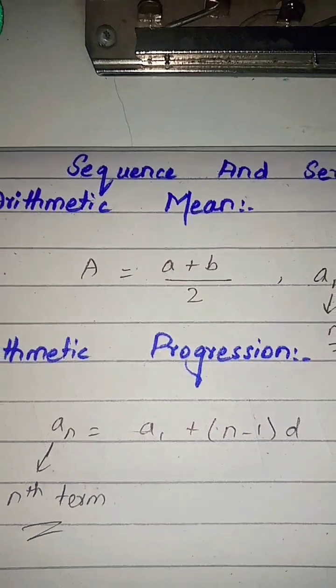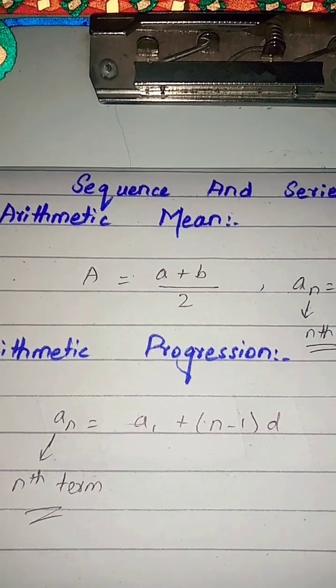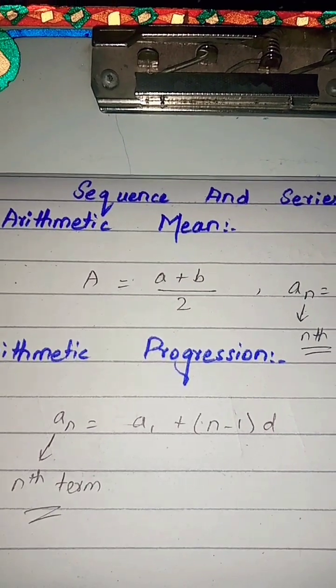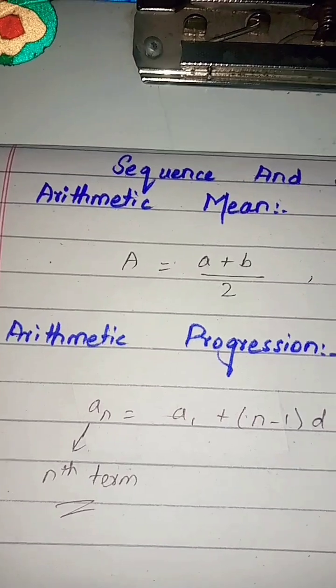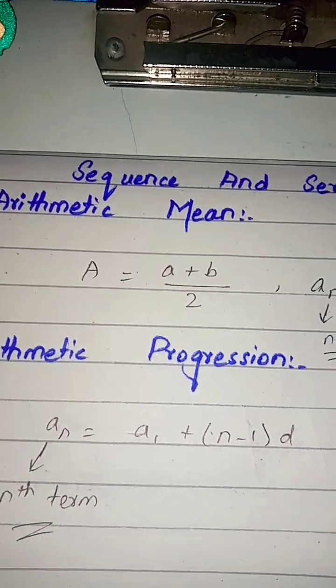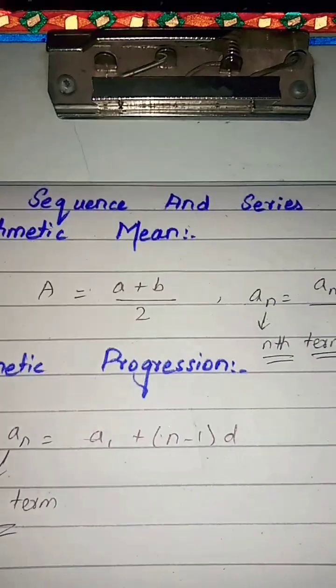When we talk about mean, it is the sum of two values divided by two, and we take the average which is called mean. Arithmetic mean has a formula: a = (a+b)/2, where a and b are the terms and constants.